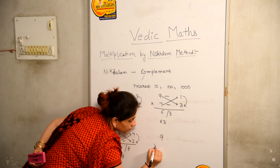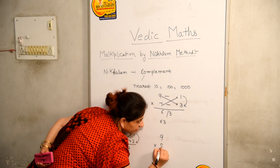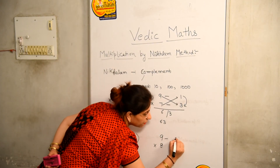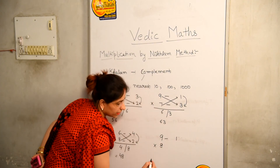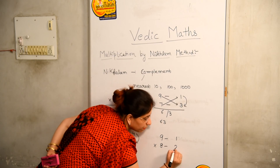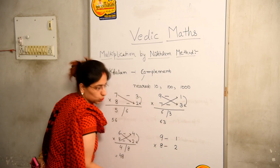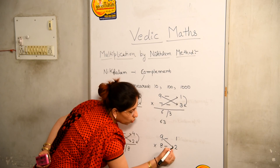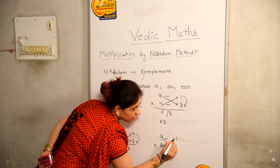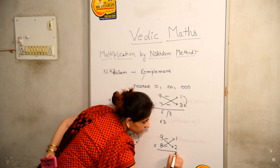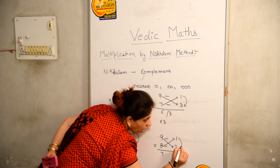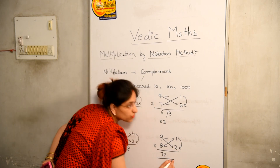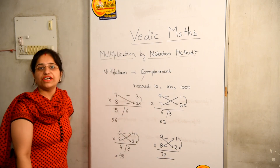Let us take one more example: 9 multiplied by 8. Nikhilam of 9 will be 1, and Nikhilam of 8 will be 2. Now 9 minus 2 or 8 minus 1 will be 7. And 1 into 2 will be 2. Your answer will be 72.